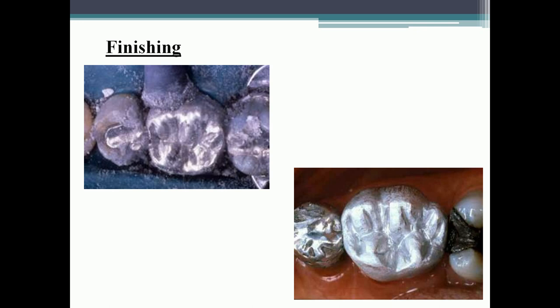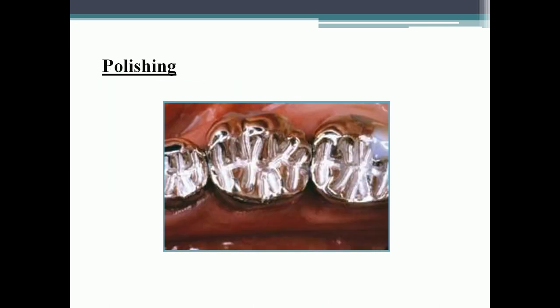An important question asked in both AIIMS and PGI exams: finishing and polishing of amalgam makes the restoration resistant to tarnish and corrosion. The function of finishing and polishing is to provide resistance to tarnish and corrosion.